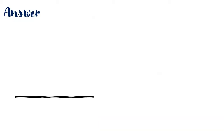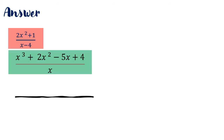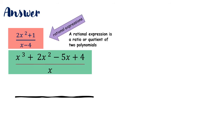Here are the answers. I have grouped these into 4 categories or groupings. The first one is called Rational Expressions. A Rational Expression is a ratio or quotient of two polynomials.